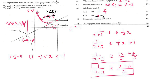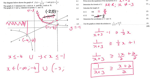If you prefer to use interval notation, you would say x is an element of negative infinity up to negative 4 in a square bracket, or from negative 3 in a round bracket up to negative 1 in a square bracket.